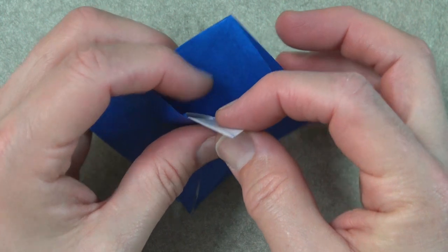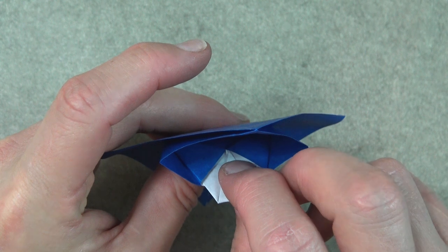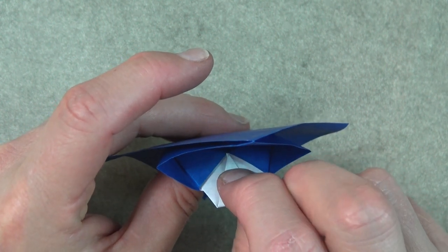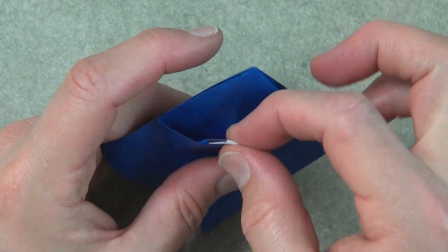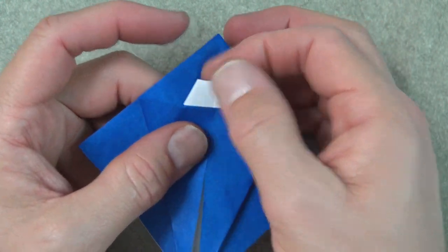Now fold this flap inside, almost to that point there. But you can go a little bit less if you want to make the face shield a little bit taller. That's to taste. About like that is good.